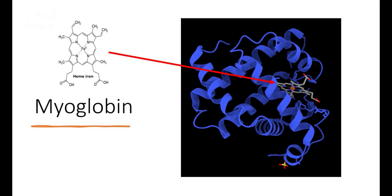Heme iron also exists in myoglobin. Myoglobin is the principal constituent of muscles. Myoglobin is a muscle protein providing oxygen to muscles for muscle contraction.